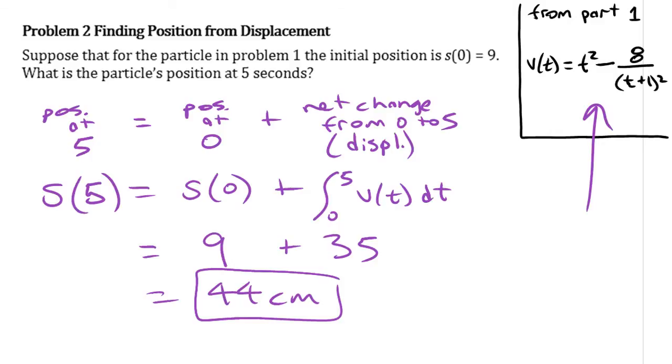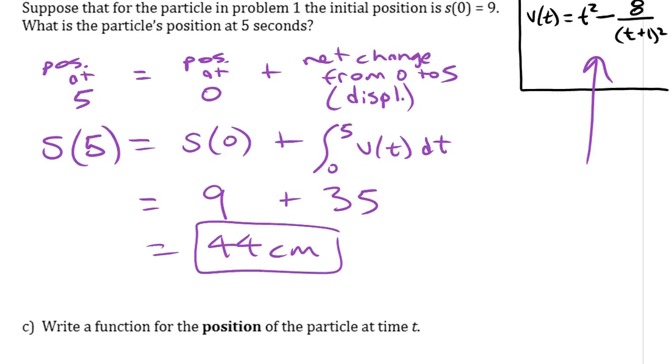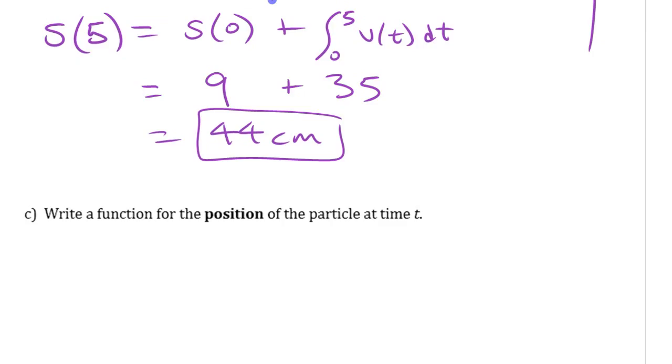Now the related question here is, what if we want a function in general for the position if all we're given is the velocity? To write an actual function for this, instead of saying s(5) equals the integral from zero to five, we're going to write s(t), position at time t, is equal to 9 plus the integral from zero to t.